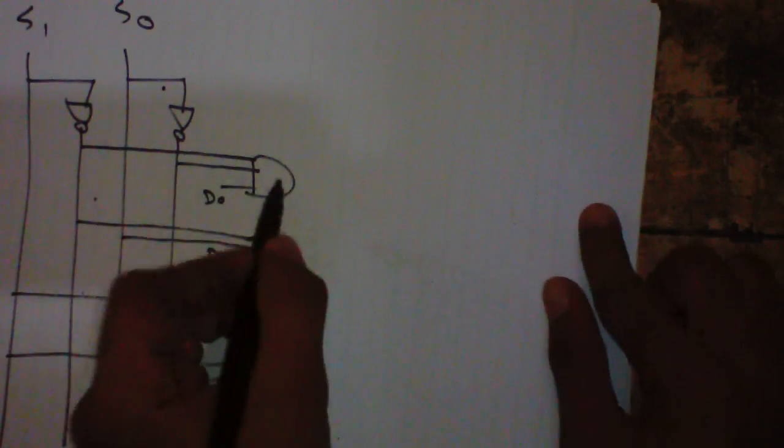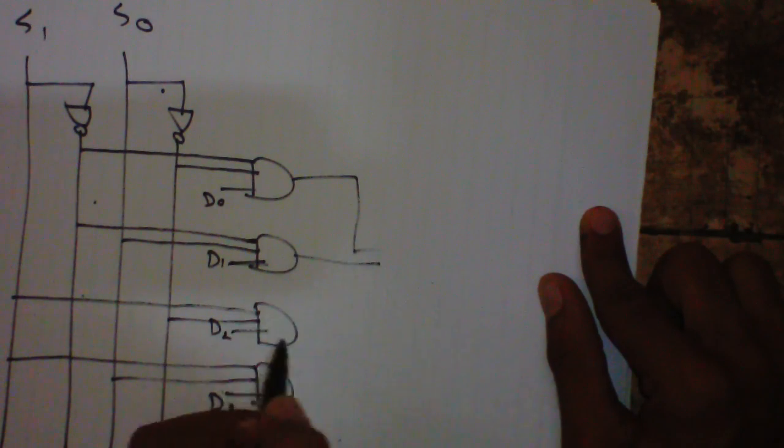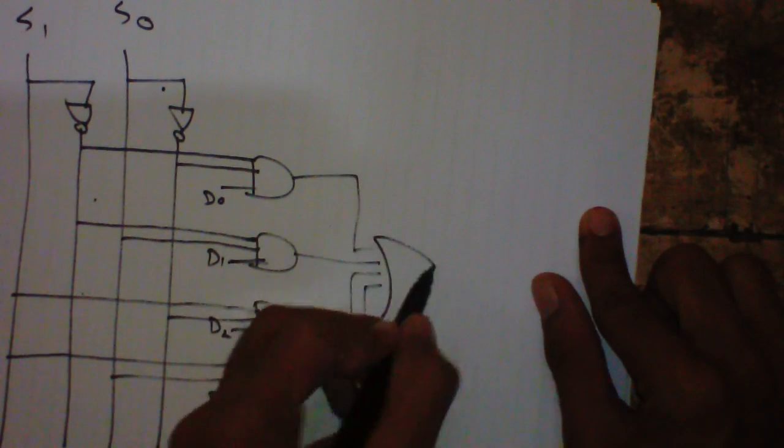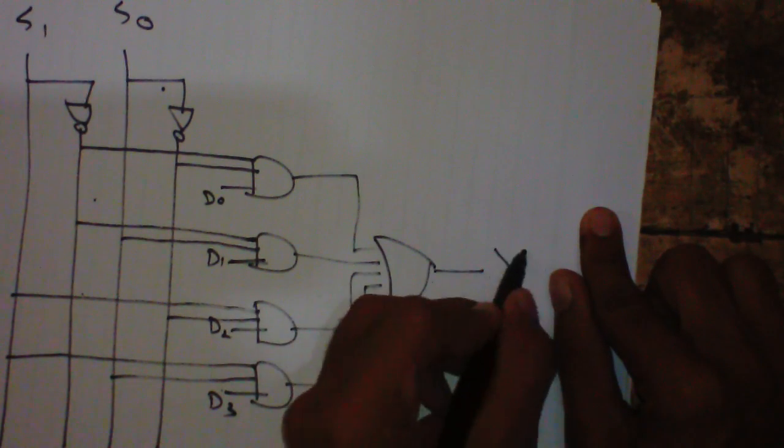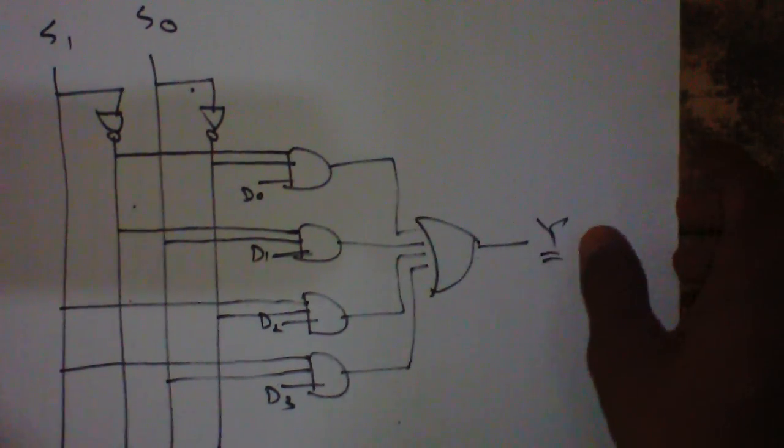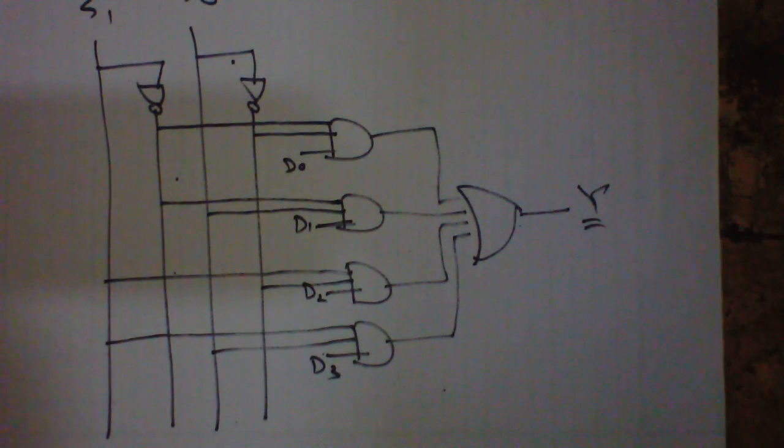Now we have to apply OR gate in order to get our desired output. So this is the basic logical circuit of the 4-to-1 multiplexer.